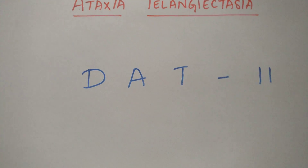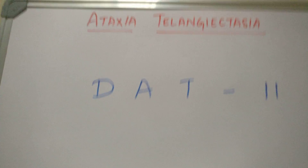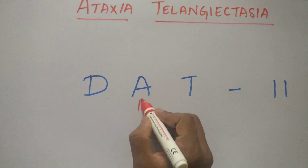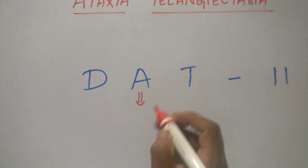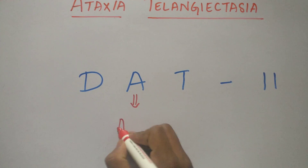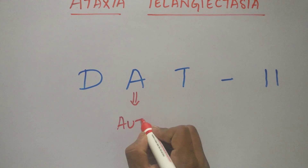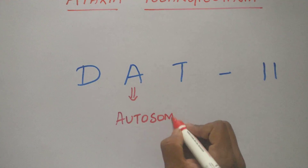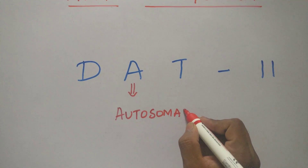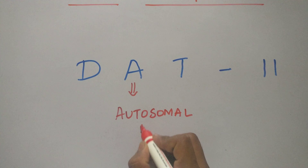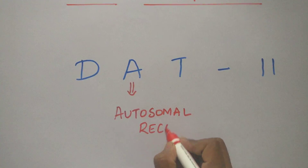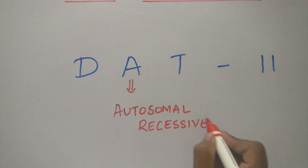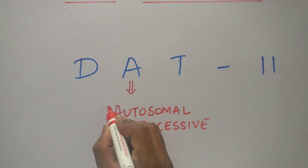What is that mnemonic? First of all, A stands for it is an autosomal recessive disease.